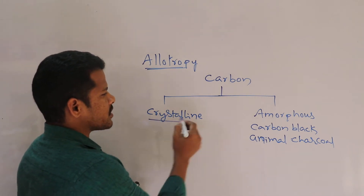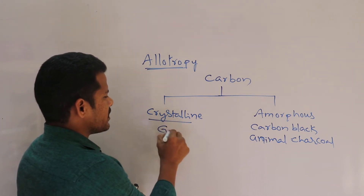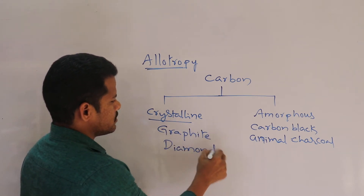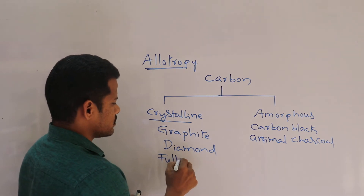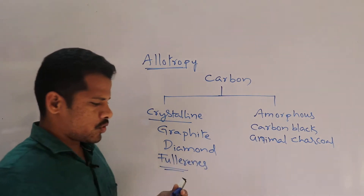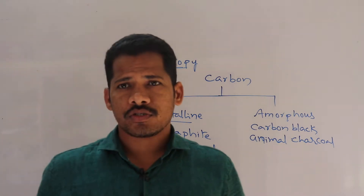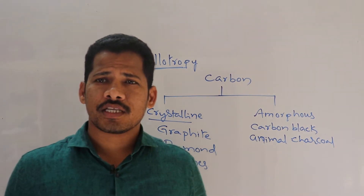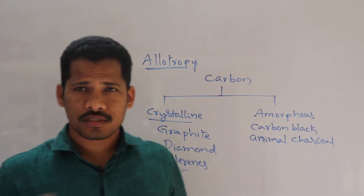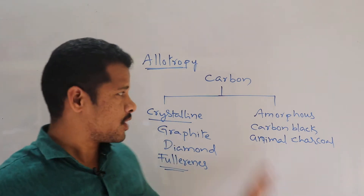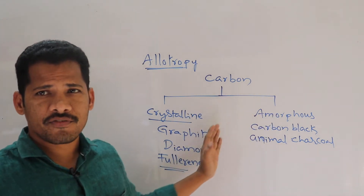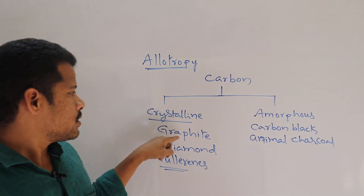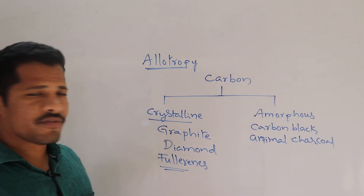Now coming to crystalline allotropes of carbon: graphite, diamond, and fullerenes. These are the crystalline allotropes of carbon. In examination they will ask about allotropy — allotropy means elements having the same chemical properties but existing in different physical forms.